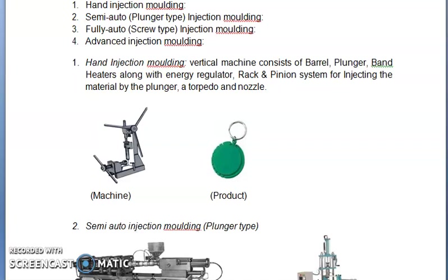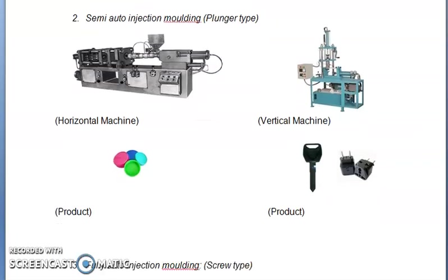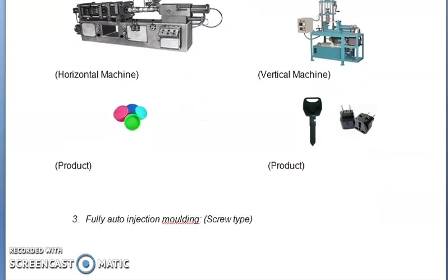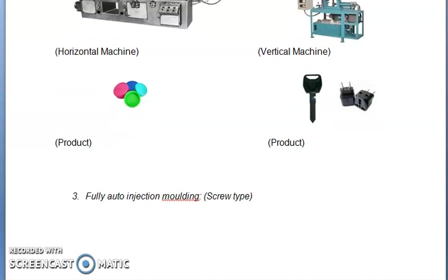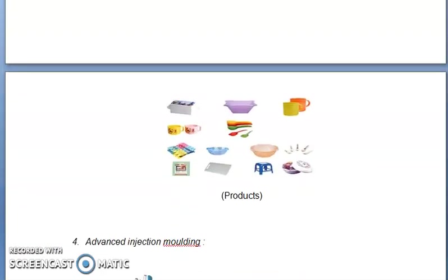Semi-auto injection molding, or plunger type — available in horizontal and vertical machine configurations. These machines produce various plastic parts. Then fully auto injection molding, that is the screw type. Here we can see the machine of fully auto injection molding and these are the products it produces.